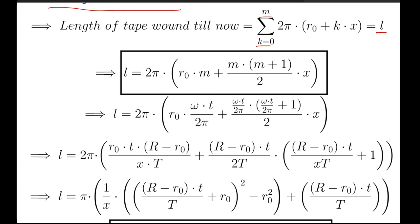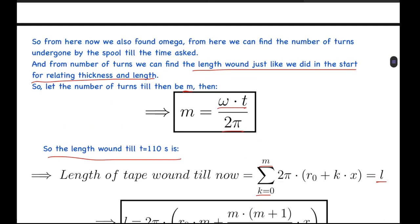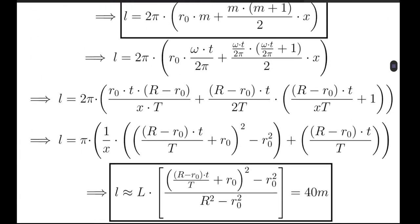Again summing this, l equals 2π[r0·m + m(m+1)/2·x]. After this, this is just manipulation after substituting the value of m, then the value of omega, and so on. So we substitute the value of m from here: omega·t/(2π) in the place of m. Again, here it is just manipulation. You can look through these steps yourself.